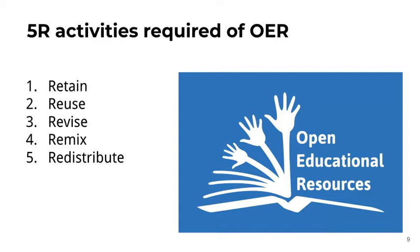Retain includes actions like download, duplicate, store, and manage. Reuse is permission to use the content in a wide range of ways, for example in a class, in a study group, on a website, or in a video. Revise is permission to adapt, adjust, modify, or alter the content itself — for example, translate the content into another language. Remix is permission to combine the original or revised content with other material to create something new, for example incorporating the content into a mash-up.